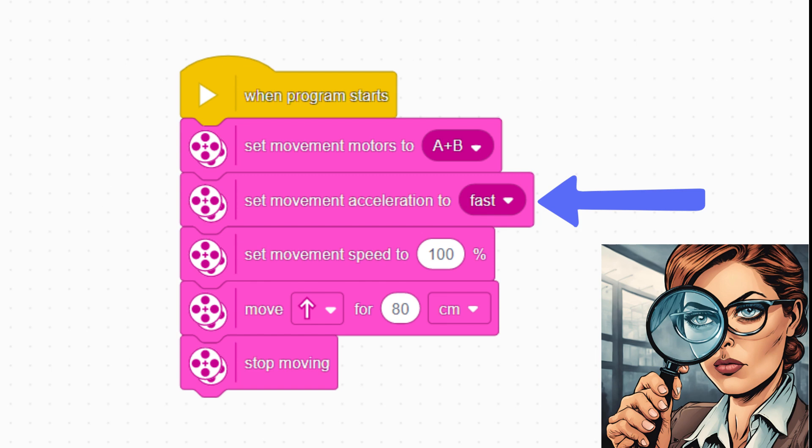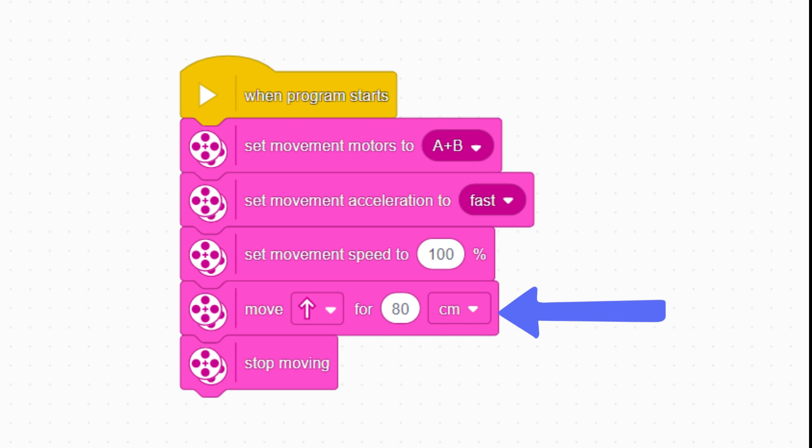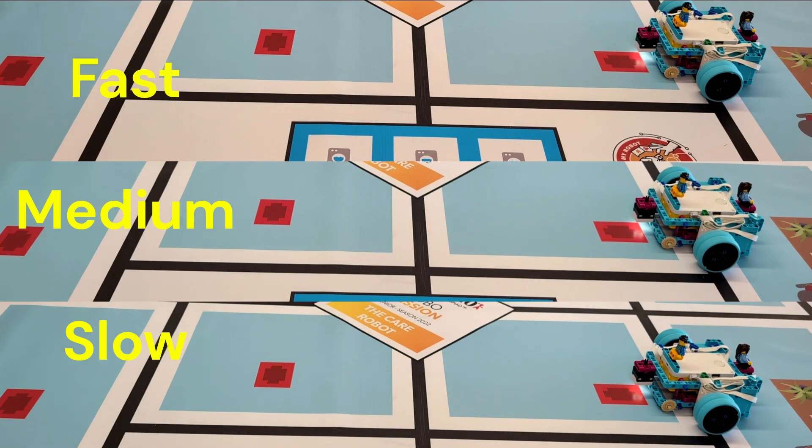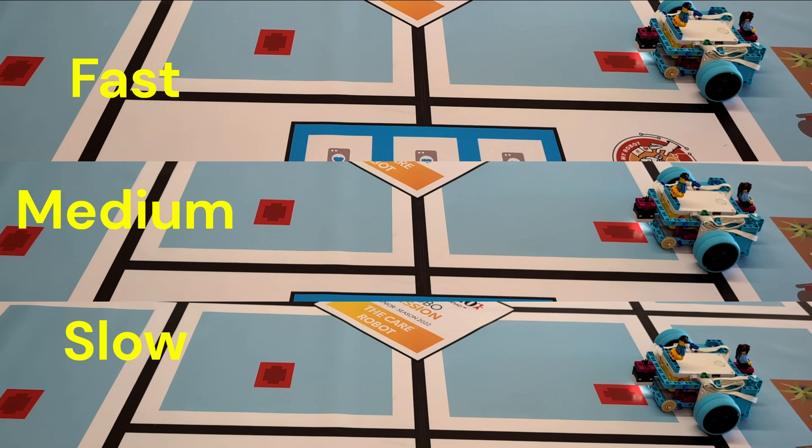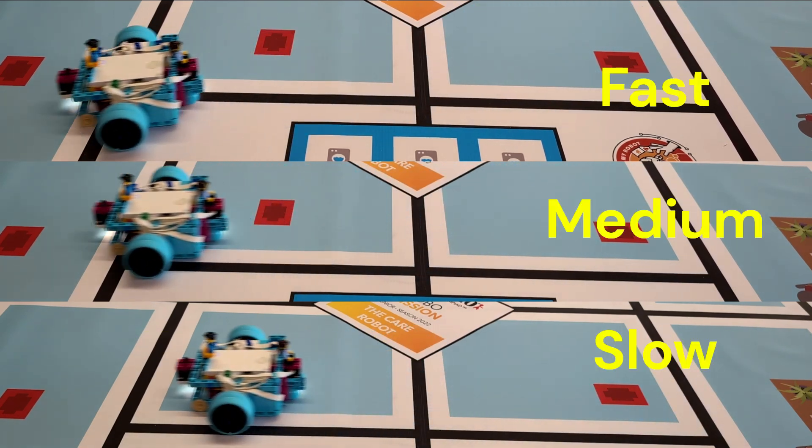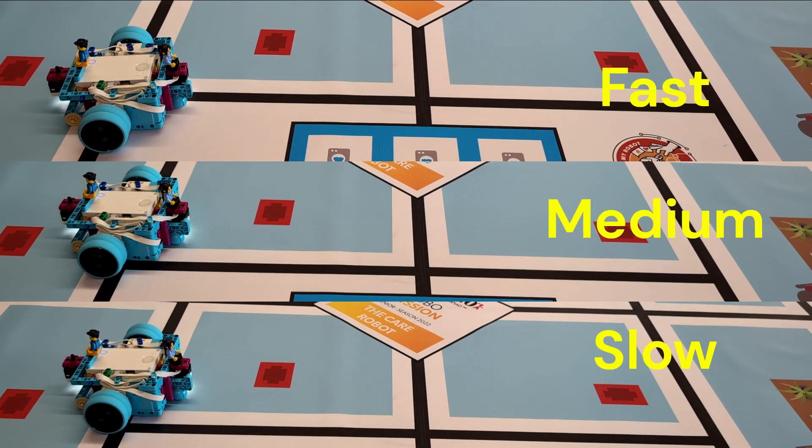We can look at the effect of the movement acceleration parameter with this simple program. We drive straight ahead for 80cm and then stop moving. Here we see all three acceleration settings running together. There's not much difference between fast and medium, but slow is slower.